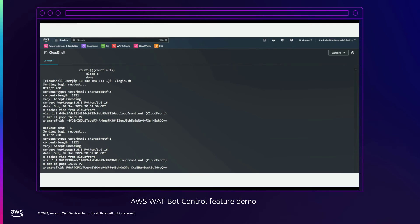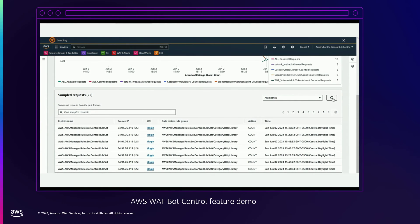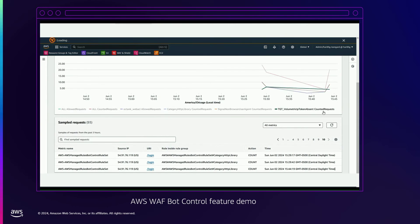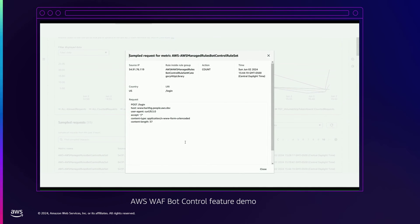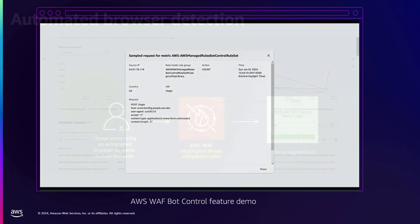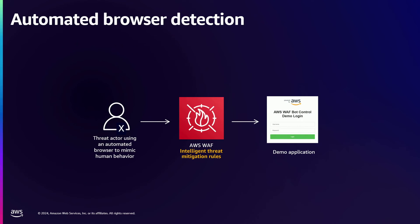I navigate to my WAF sample request dashboard, click on the incoming request, and I can see this request is being labeled as an HTTP library. From here, you could decide to block such requests, rate limit them, or serve a challenge or CAPTCHA action. Attackers retool constantly, so for my next demo I'm going to increase the attack vector sophistication.